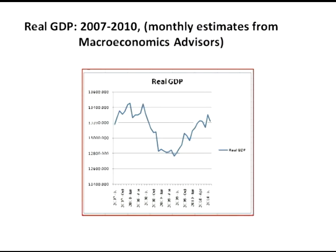If you look at the next slide here, you'll see that real GDP — these are monthly estimates — declined very sharply from June to December 2008. And the financial crisis that Robert Hall was talking about, the fall of 2008 post-Lehman Brothers failure, actually occurred about halfway through this decline in real GDP.